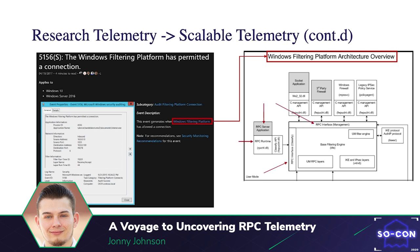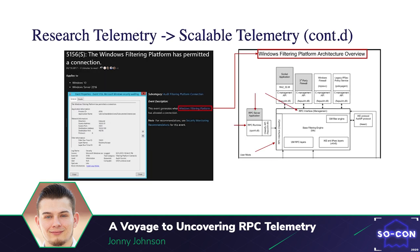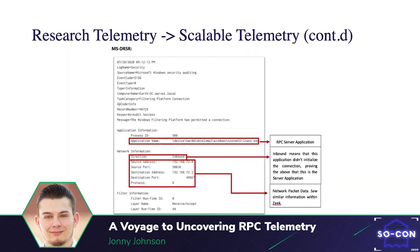When looking at the Windows Filtering Platform, I found an architecture map — and inside it RPC was everywhere. I saw the RPC server application where server code would be stored, the RPC runtime, the RPC interface — it all directly correlated with RPC. The next question was: does this data correlate with Zeek? If it contains the same information it would be a good event to use for joining in an analytic.